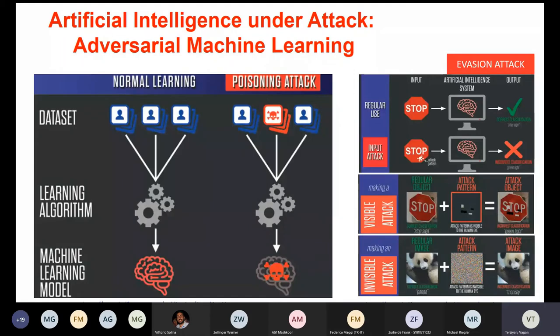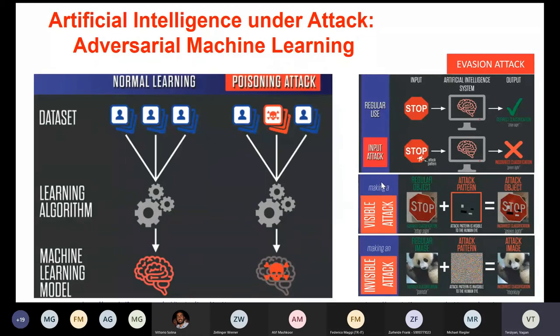In evasion attacks, the real-time testing data is also poisoned — this is a very complicated type of attack. In both cases the system makes wrong decisions, and notably nothing in the hardware platform or software is touched; the system works perfectly but decides or acts incorrectly.